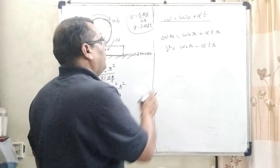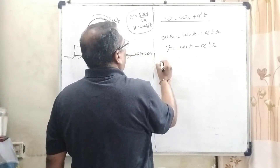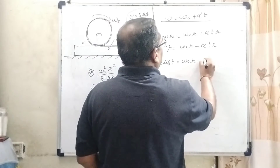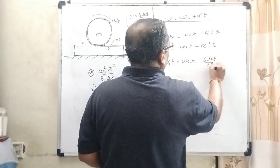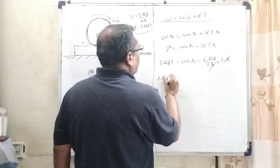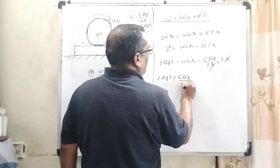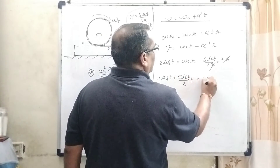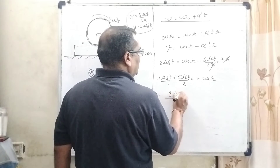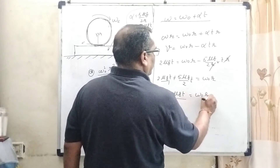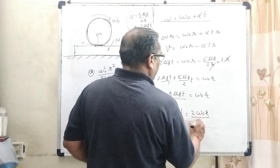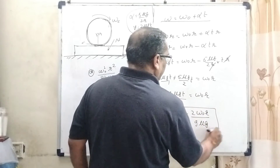Substituting values: 2 mu g t equals omega naught r minus (5 mu g upon 2r) times t times r. One r cancels out. Transposing to the left side: 2 mu g t plus 5 mu g upon 2 times t equals omega naught r. Taking LCM of 2: (4 + 5) mu g t upon 2 equals omega naught r, giving 9 mu g t upon 2 equals omega naught r. So t equals 2 omega naught r upon 9 mu g.